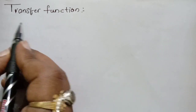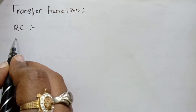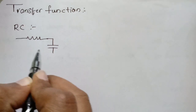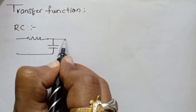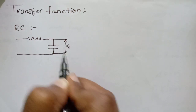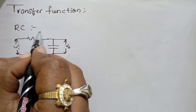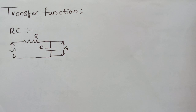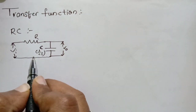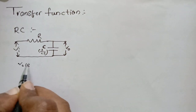First, I am having an RC network — a resistor here and a capacitor here. I'll be taking the output across the capacitor, it is V-naught, and I am having the input voltage as Va. This is R, this is C. I'll be writing the transfer function for it: this is 1/Cs in the s-domain. So V-naught(s) by Vi(s).